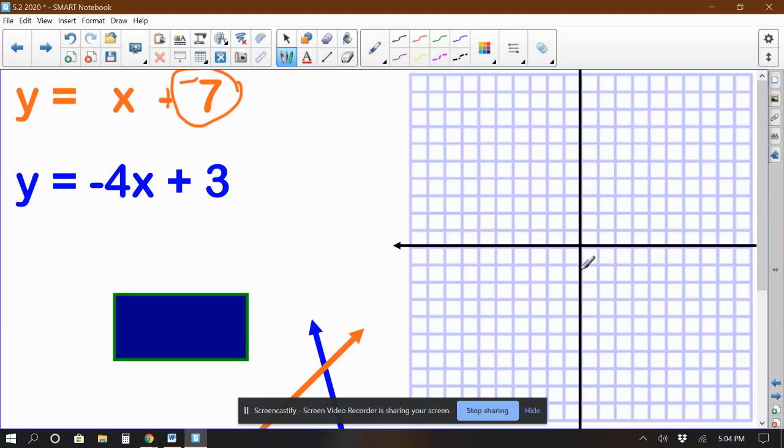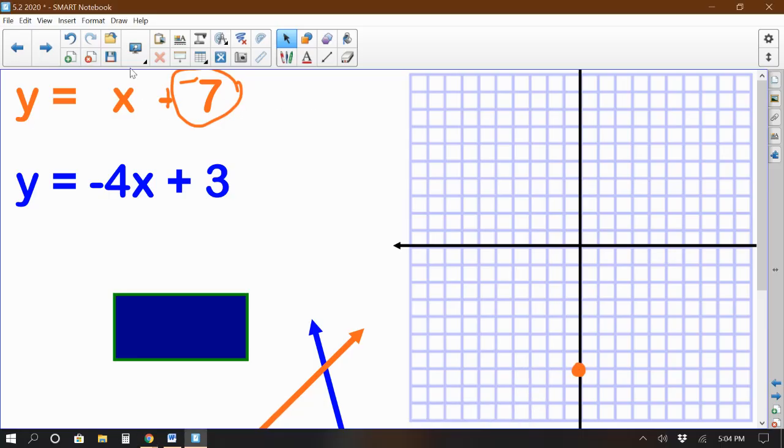Now, the number at the end here, this minus 7, if we add a line and change a sign, we can see that this 7 is actually a negative 7. So this is our y-intercept of this equation. What I mean by y-intercept is that the line actually crosses the y-axis at negative 7. Let's see here, negative 1, 2, 3, 4, 5, 6, 7. So right here, that's where it crosses.